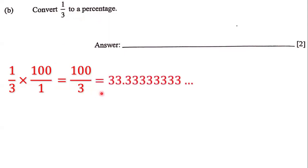100 divided by 3 is going to be 33.333, and we continue with the threes. This goes on and on. Now, 0.333 continuing on is actually a third. So what we actually have here is 33 and a third, and this is a third converted into a percentage.